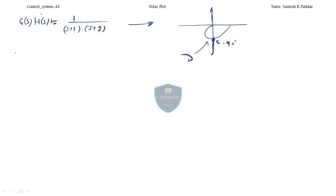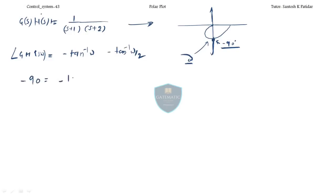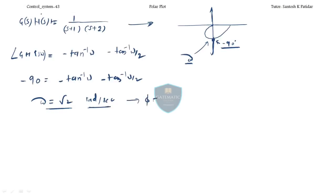If you find out the phase of this system, it will be minus tan-inverse(Omega) minus tan-inverse(Omega/2). According to this, if you want to find out the Omega value at minus 90 degrees, you compare: tan-inverse(Omega) + tan-inverse(Omega/2) equals 90. You will get Omega equal to root 2 radians per second. This is the frequency when your phase is minus 90 degrees.